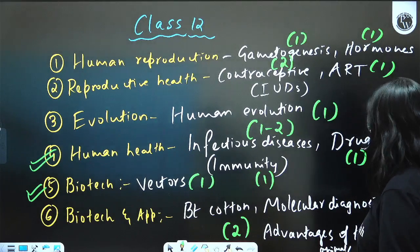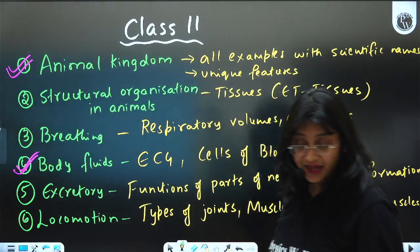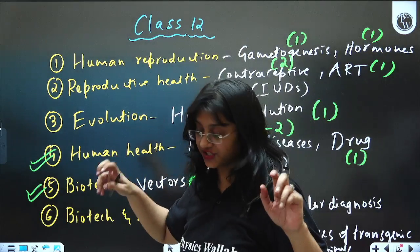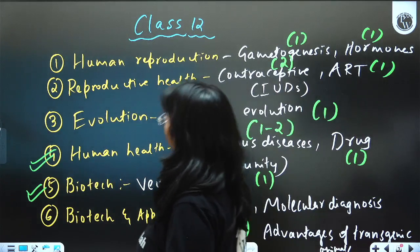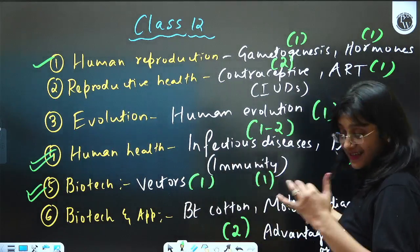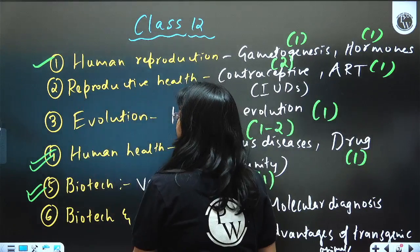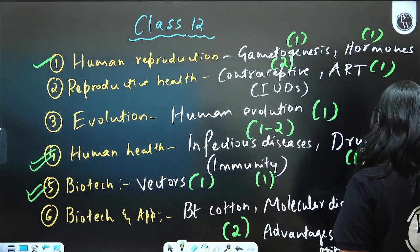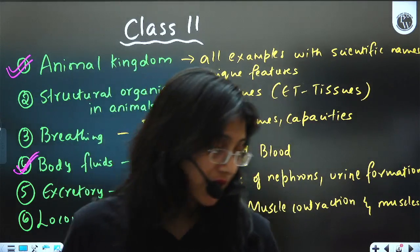To summarize Class 12: the highest-weighted chapters are Human Health and Diseases and Biotechnology: Principles and Processes. Human Reproduction also has good weightage, and in Reproductive Health more questions are asked. For Class 11 standard, the highest-weighted chapters are Animal Kingdom and Body Fluids and Circulation.